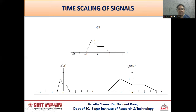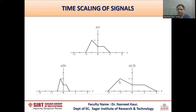Similarly, if I want to obtain another time scaled signal x(t/2), here a = 1/2 and we know 1/2 is less than 1. So if a is less than 1, the signal will be time expanded. The value which was at t = -1 will now be at t = -2, and the value which was at t = -1/2 will now be at t = -1. Similarly, the value at t = 1 will now be at t = 2, and the value at t = 1/2 will now be at t = 1. So here we can see this is the expanded version of the original signal, expanded by a factor of 1/2.